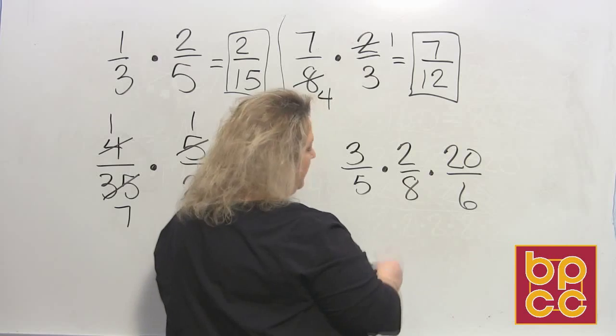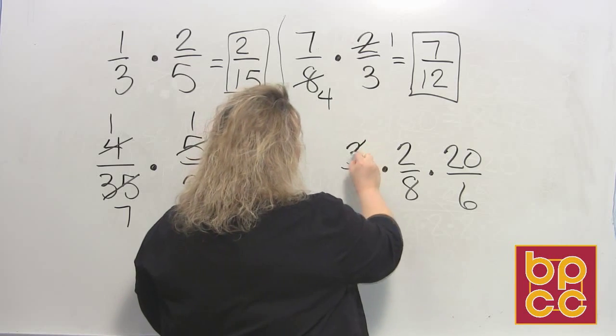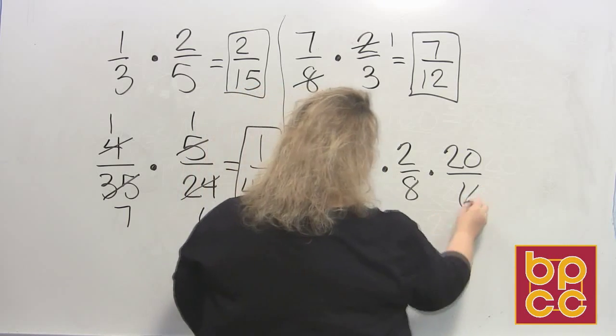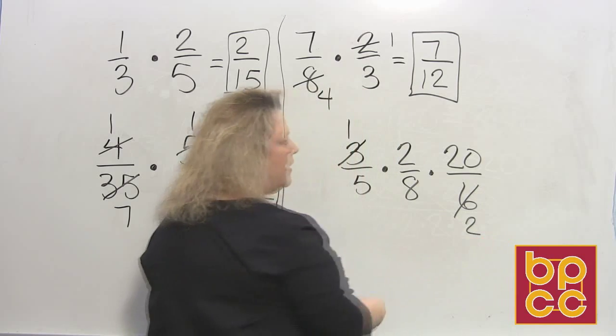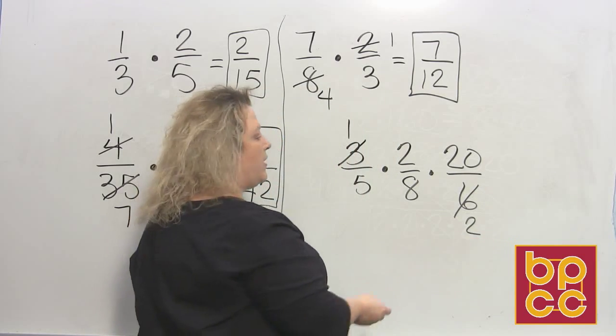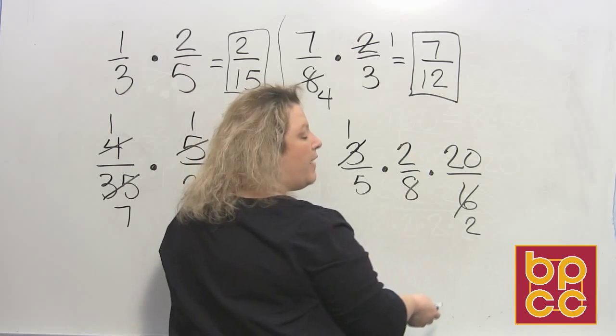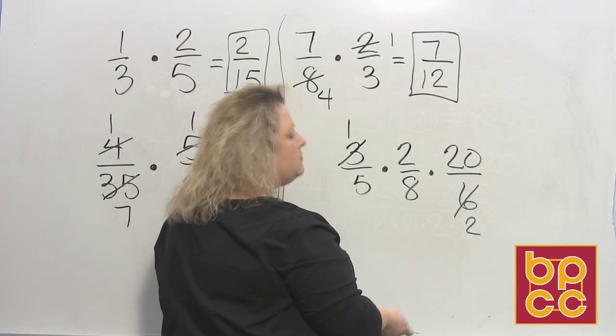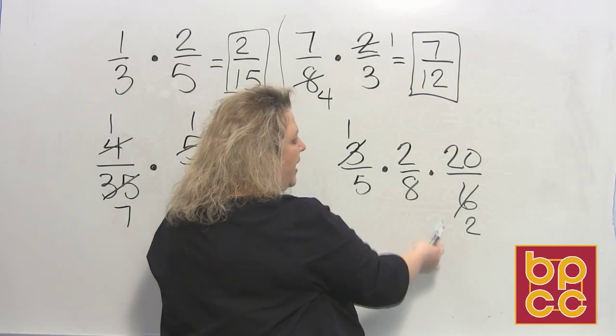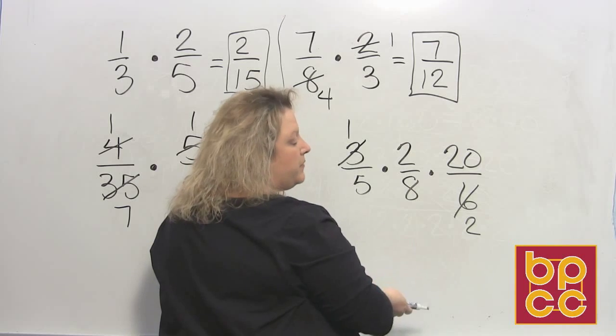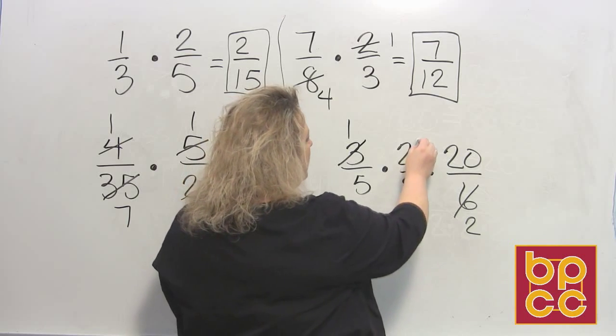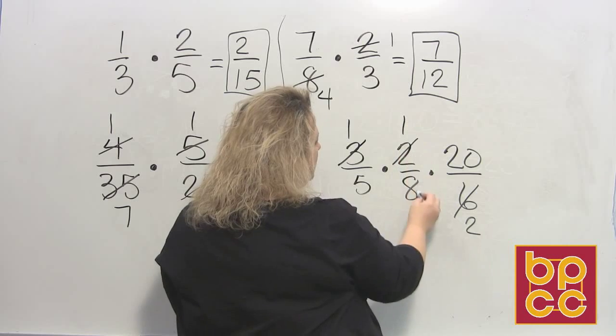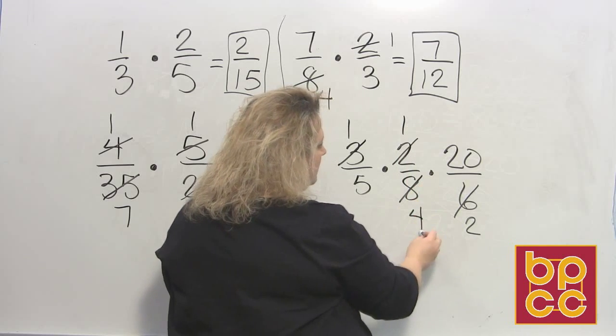Yeah, the six way down here does. So three divides into three once, three divides into six two times. Then I go to my next fraction, two. Does two have anything in common with anybody? Yeah it does. Two has an eight. They both have a two in common. So two divides into two once, two divides into eight four times.